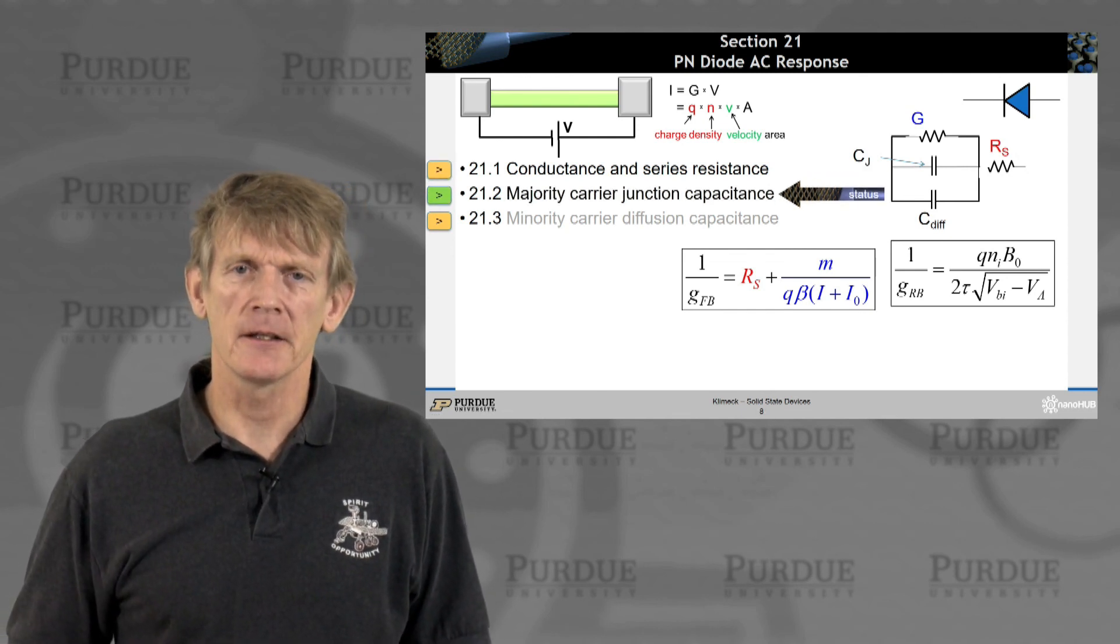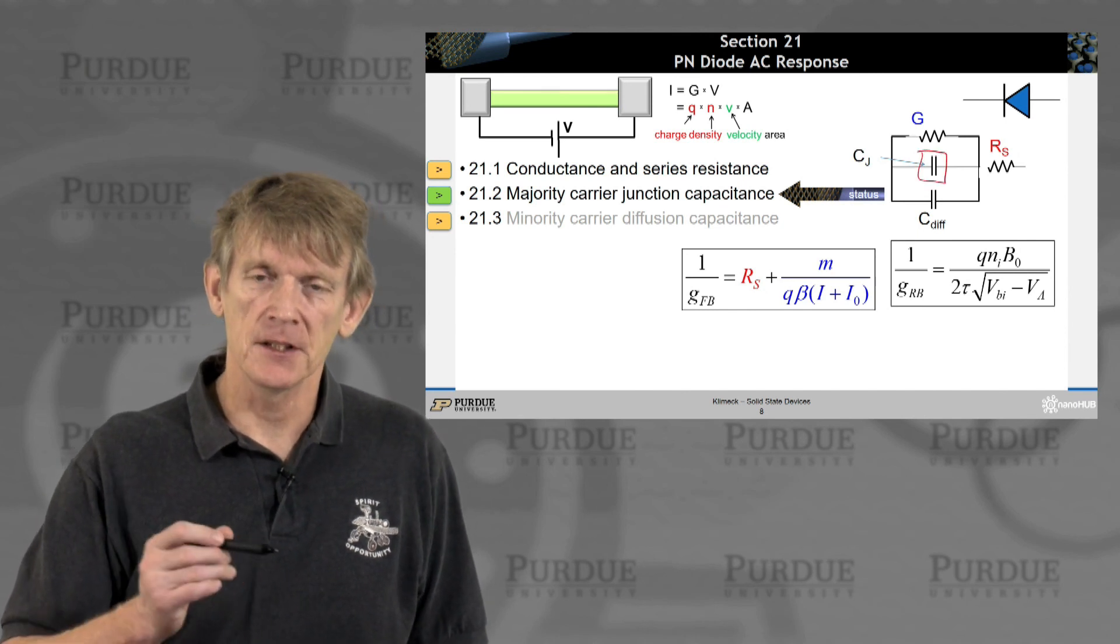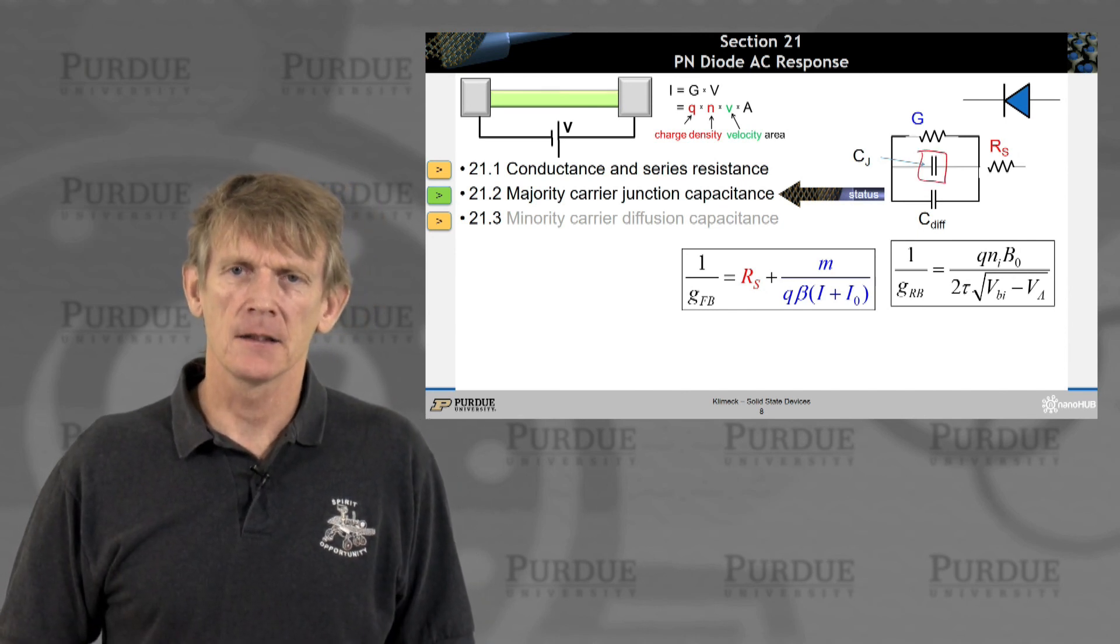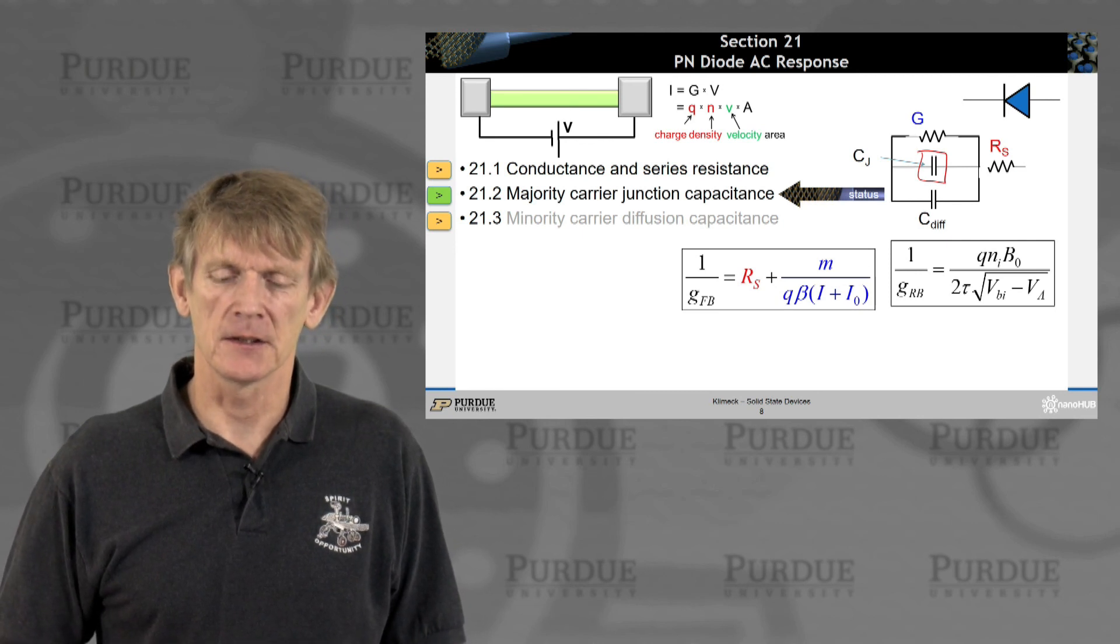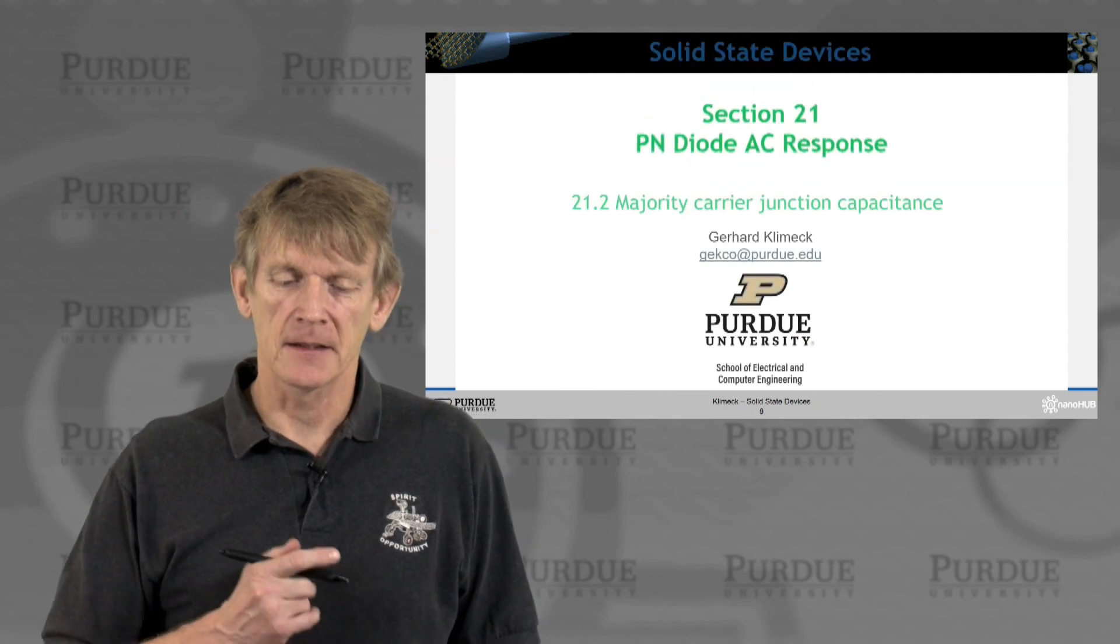Now let's move to the majority carrier capacitance. That would be one of the two capacitors here that are in series, and it'll become more clear why there's two capacitors. That'll be in the next section.